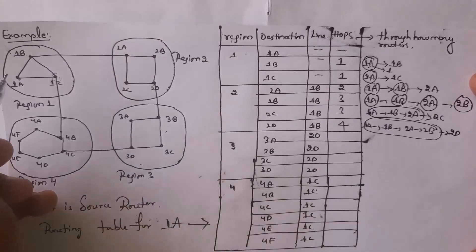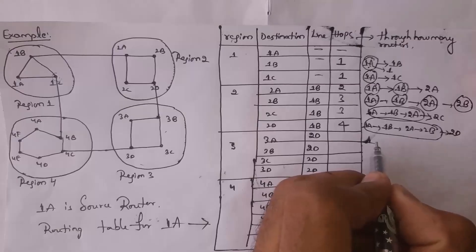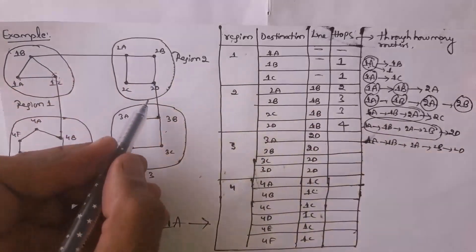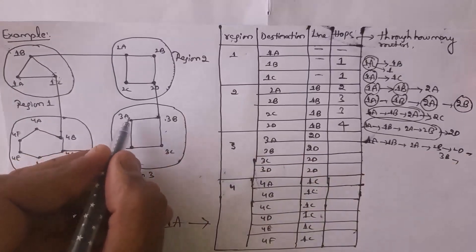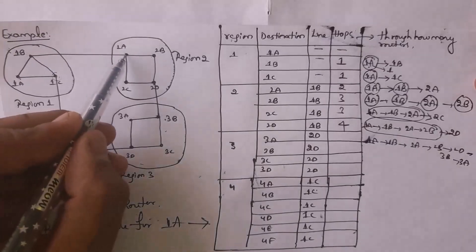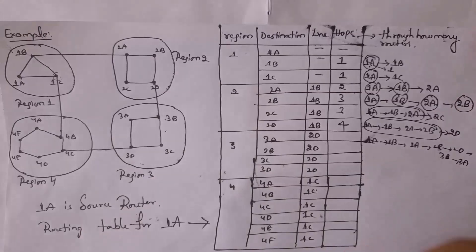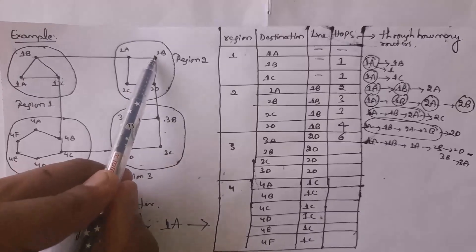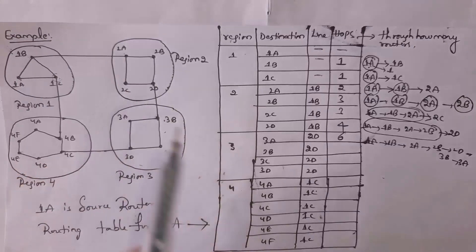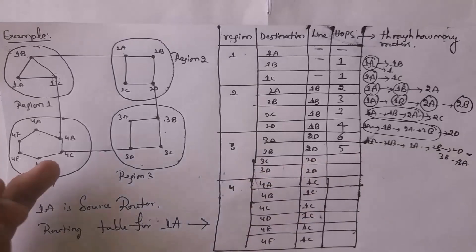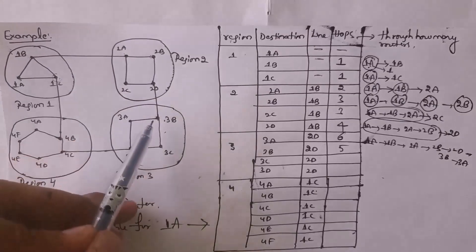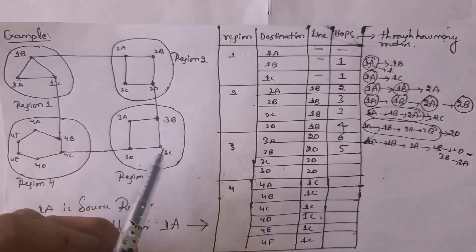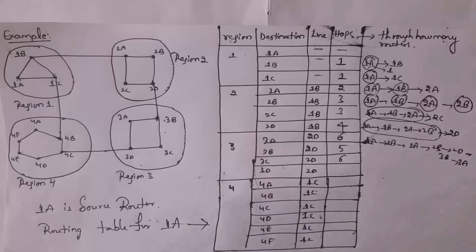For destination 3C: data travels 1A → 1B → 2A → 2B → 2D → 3B → 3C — hop count is 6. For destination 3D: data passes through 7 routers — hop count is 7. For destination 4A: data travels 1A → 1C → 4B → 4A — hop count is 3. For destination 4B: data travels 1A → 1C → 4B — hop count is 2.